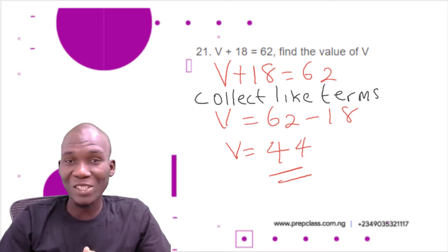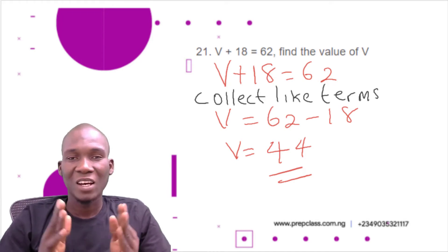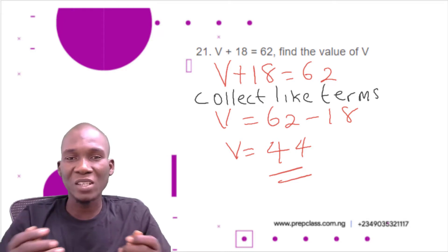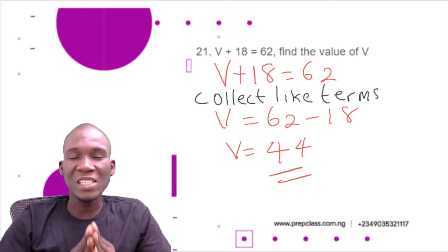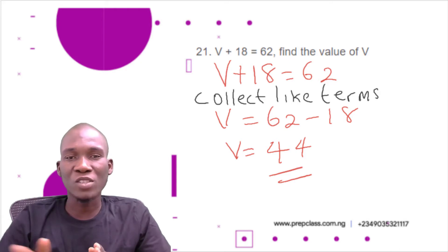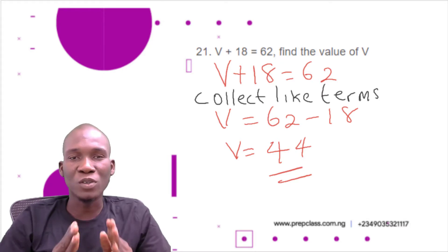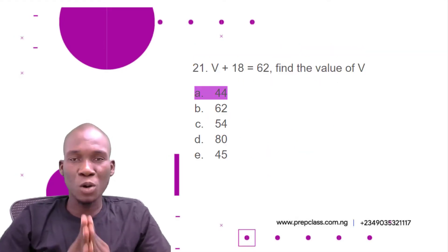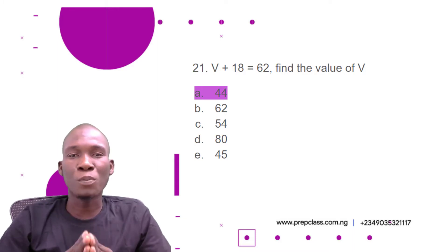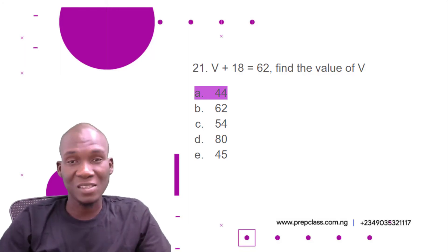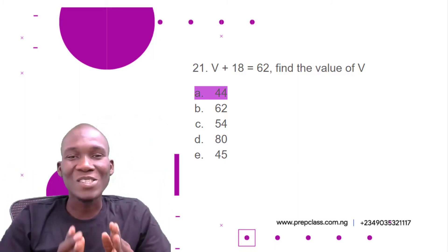I hope you understand the logic. Take note of what you are looking for, which is v. Collect like terms — if there are other v's bring them together, but here v appears just once, so we take the numbers to one side. V remains on one side and equals 44. Looking at the options, the correct answer is option A, 44. You can see how simple mathematics is — just calm down, solve, and get your answer.